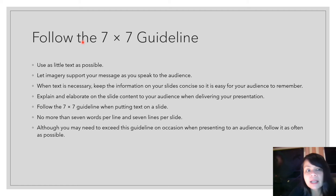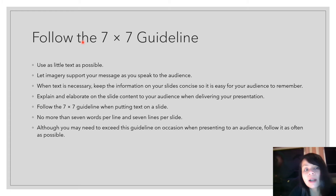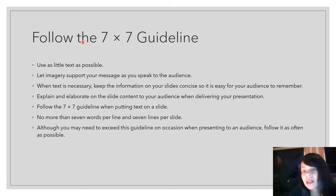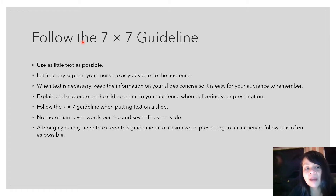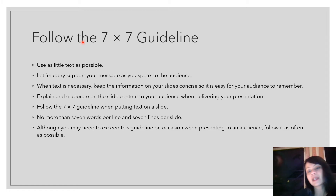Follow the seven-by-seven guideline: use as little text as possible and let imagery, graphics, pictures, charts, or tables speak to your audience. When text is necessary, keep it concise so it's easy for your audience to remember. Only use key points and elaborate on the slide content verbally. The seven-by-seven guideline means no more than seven words per line and seven lines per slide. Although you may need to exceed it sometimes, follow it as often as possible.